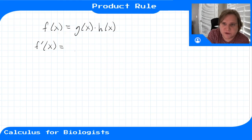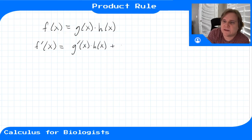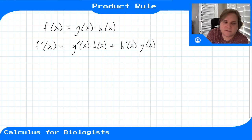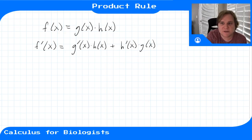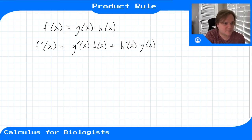It's going to be the derivative of g times h plus the derivative of h times g. It's the derivative of one times the other plus the derivative of the other one times the function.